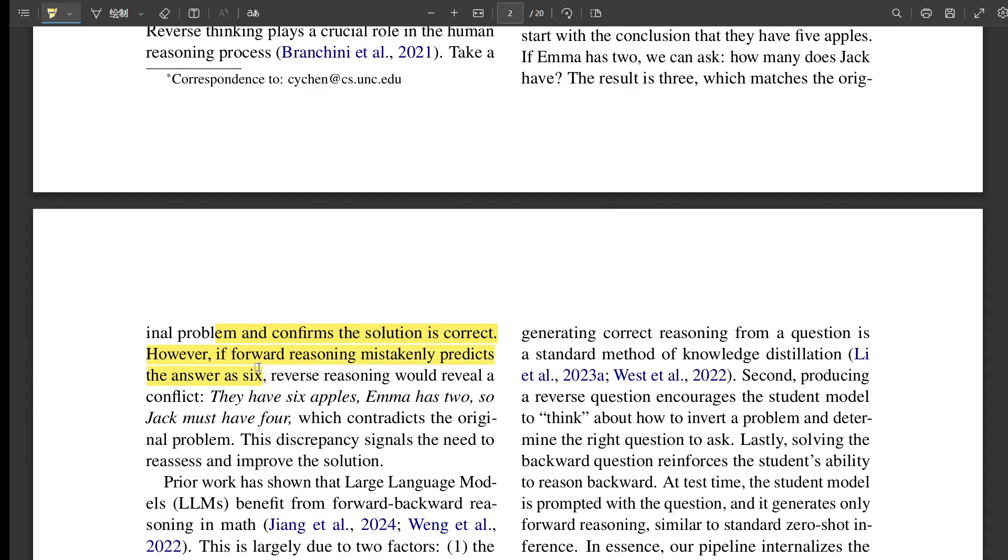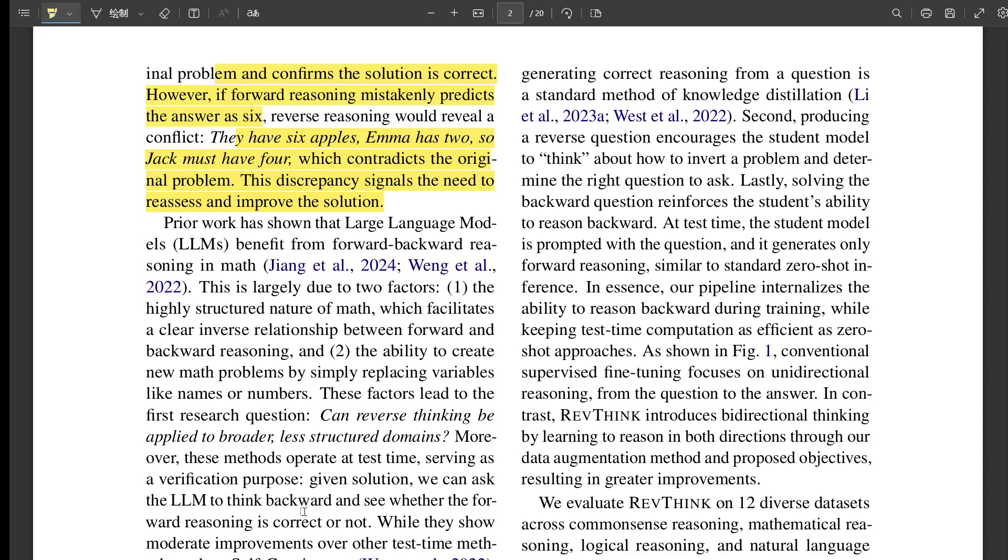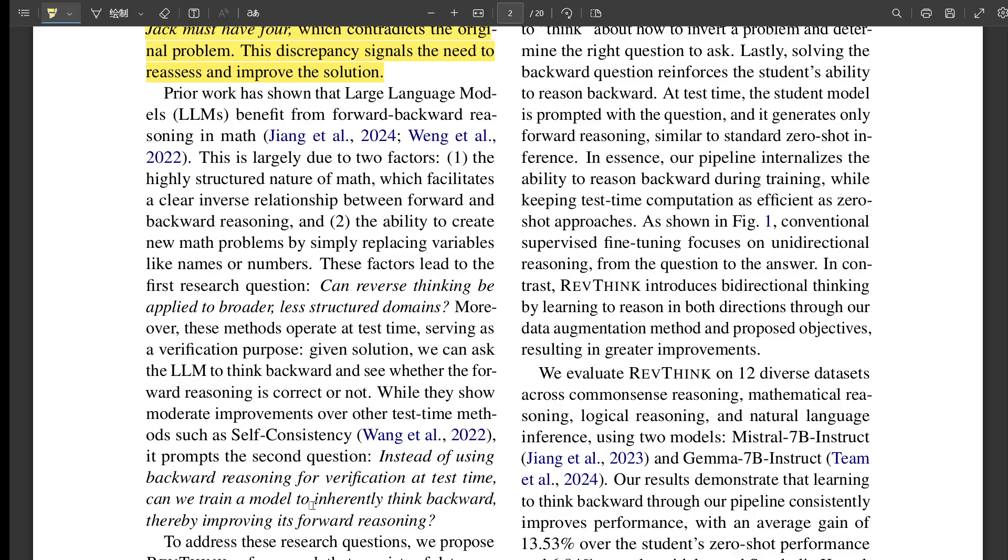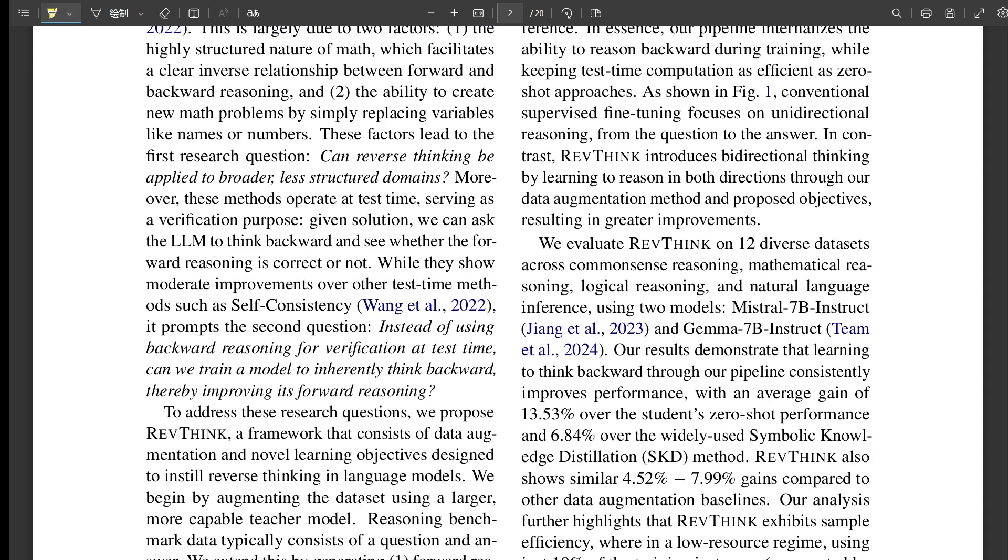Now they have this improved data set all set up to teach this reverse thinking, and that's where the multitask learning comes in. They train a smaller LLM, they call this the student model, and they train it on this new data. But they don't just make it solve problems in the regular way. Instead of just learning to solve problems forward, they actually make it learn three different things at the same time: how to do the forward reasoning, how to generate those backward questions, and then also how to do the backward reasoning. It's like they're giving it a mental workout, making it think in multiple directions.